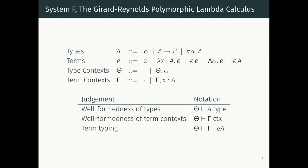The basic idea with the polymorphic lambda calculus is that we add variables to our types so that a single term can now be allowed to have many different types. We are going to take the simply typed lambda calculus with functions, and to that we add type variables. In order to write terms that have many different types we introduce the polymorphic type quantifier: for all alpha, A. This means that if you have a term of type for-all alpha A, we're allowed to substitute any type we like for the variable alpha.